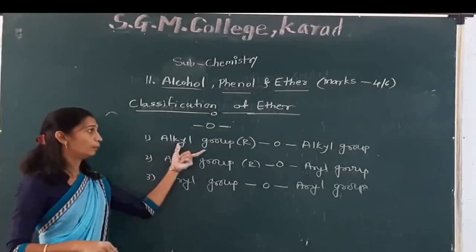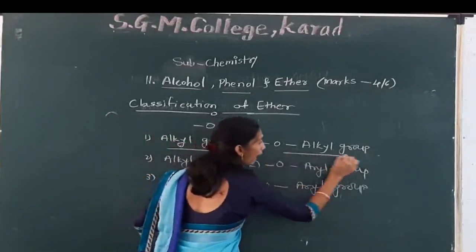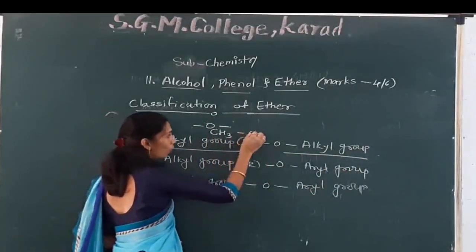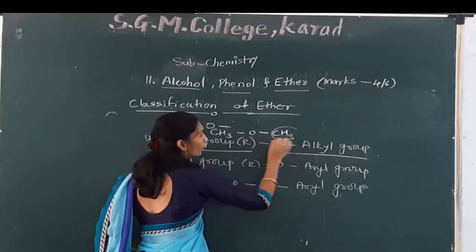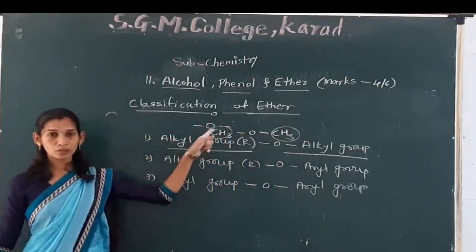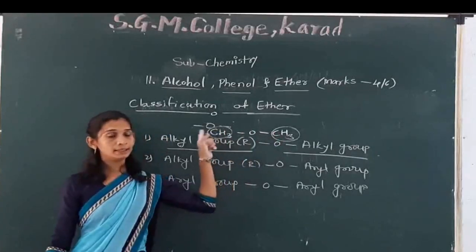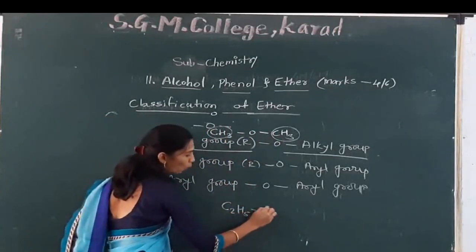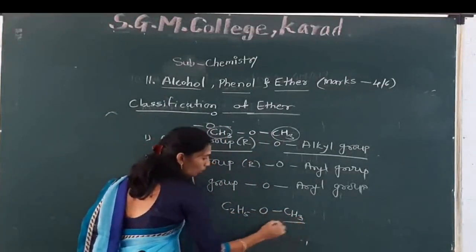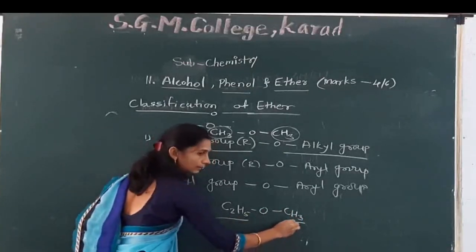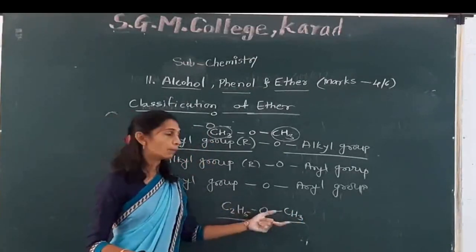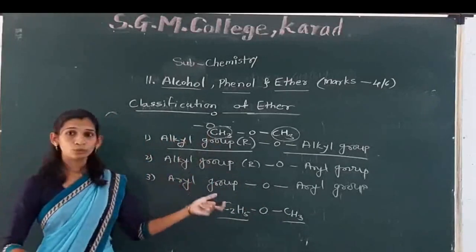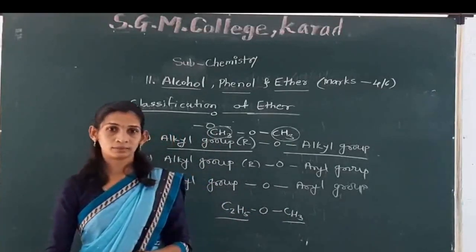If that oxygen has the same alkyl group on both sides — for example CH3OCH3 — both sides are the same alkyl group, so that type is simple ether. And if we take an example C2H5OCH3 — both are different, methyl on one side and ethyl on the other — that type of compound is known as complex ether. These are the two types of ethers. Thank you.